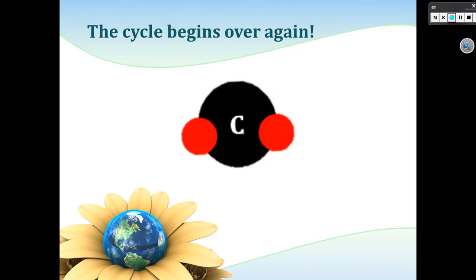Through the decomposition of plants and animals, the combustion of fossil fuels, and the respiration of animals, the carbon atom is released back into the atmosphere, and the cycle starts all over again.